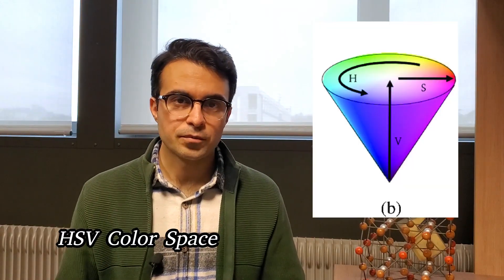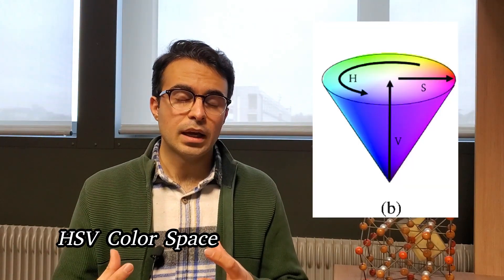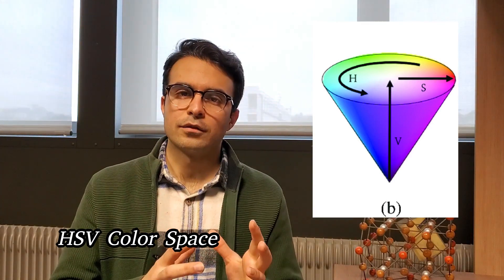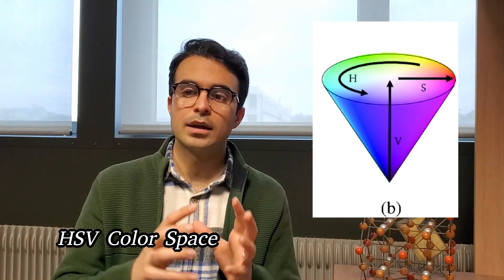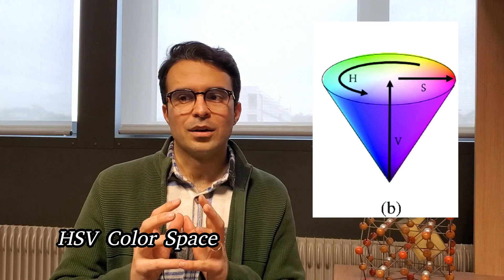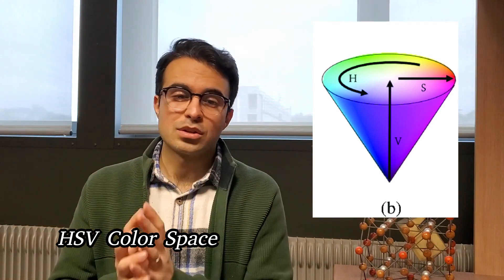There's another color space that is called HSV. HSV actually is a derivative, a modification of RGB. But it represents other information, it represents color in a different way. Again we have three values or three coordinates.